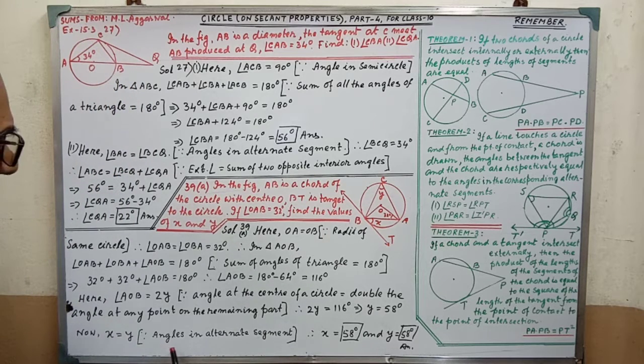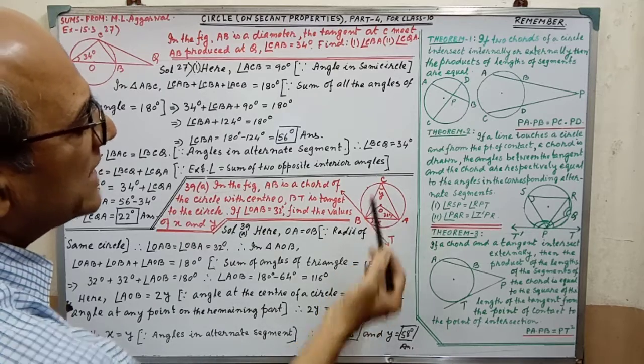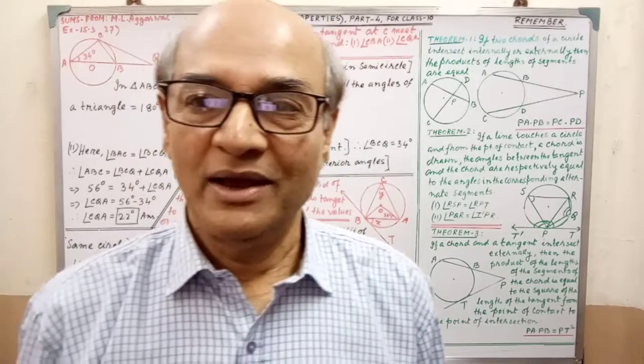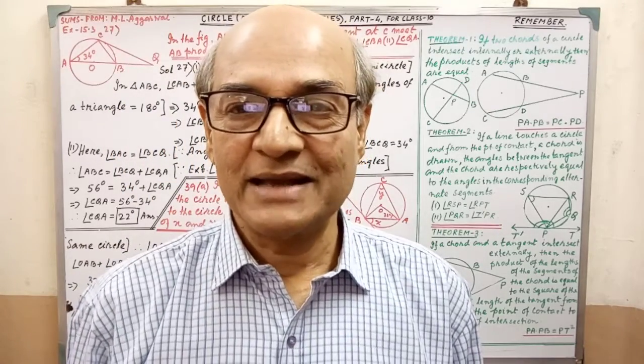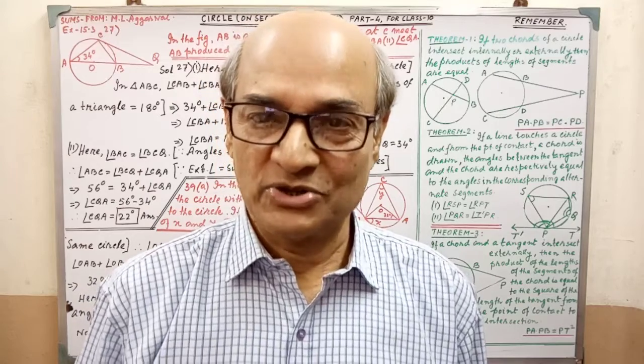Now, X equal to Y, since angle in alternate segments are equal. Alternate segments are equal. Therefore, X equal to 58 degree and Y also 58 degree. The sum is completed. Very simple. Please pay your attention on the solution again.